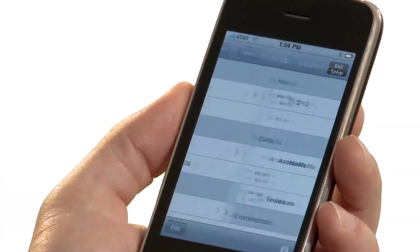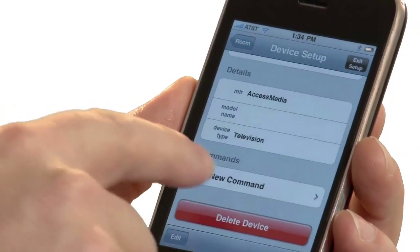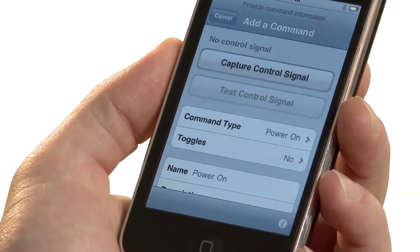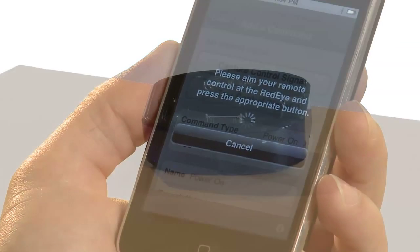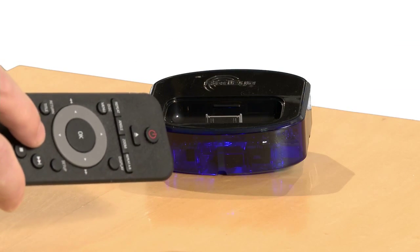To teach your RedEye a new command, first select, or create, the device that you want to control. Next tap on the Add New Command row. With your old remote in hand, tap on the Capture Control Signal button to put your RedEye into learning mode. Point your old remote toward the front of the RedEye and press the appropriate button.